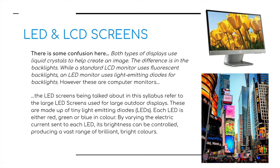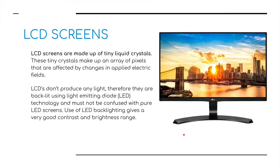What the syllabus is talking about are large LED screens, like those in Times Square in New York — large outdoor displays. These are made up of tiny light-emitting diodes. Each LED is either red, green, or blue in color, and by varying the electric current sent to each LED, its brightness can be controlled, producing a vast range of brilliant, bright colors. LED screens are made up of tiny liquid crystals forming an array of pixels that are affected by changes in applied electric fields. LCDs don't produce any light themselves, so they need some kind of backlight.